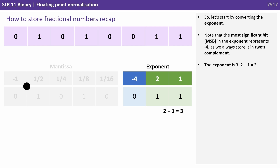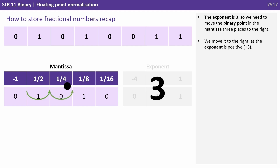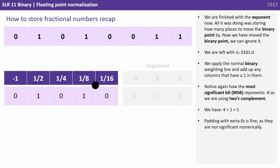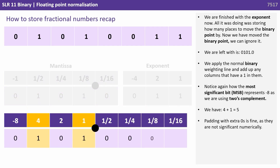Let's start by converting the exponent. Note that the most significant bit in the exponent represents minus 4, as we always use 2's complement. The exponent is therefore 2 plus 1, or 3. So we need to move the binary point of the mantissa three places to the right, as the exponent is positive. We're left with 0101.0. Applying the normal binary weighting and adding up columns with a 1: the MSB represents minus 8 in 2's complement. We have a 1 in the 4 column and a 1 in the 1 column — 4 plus 1 is 5. Padding with extra zeros is fine as they're not significant numerically.